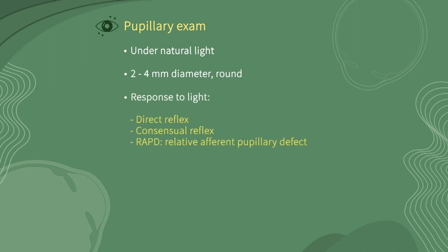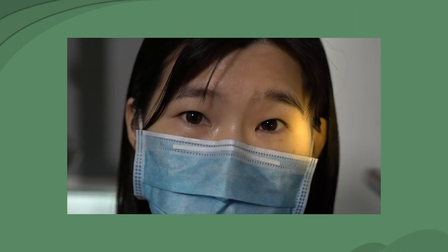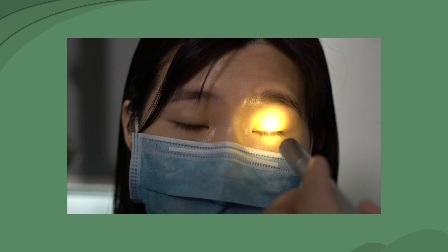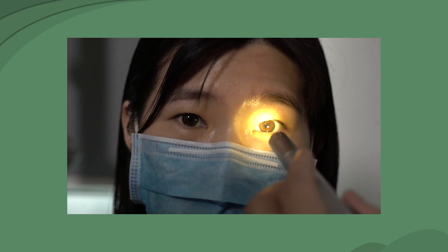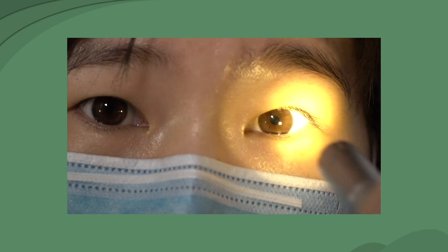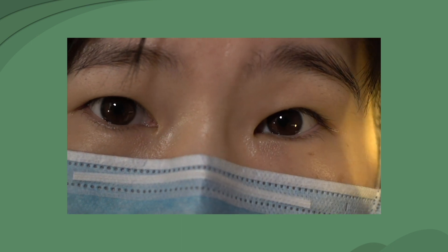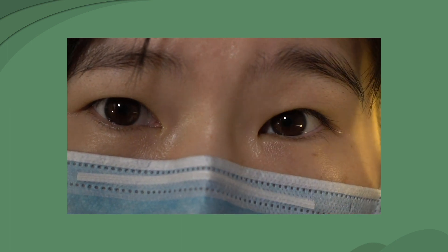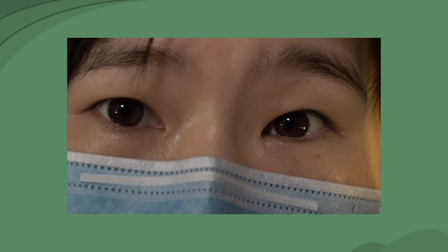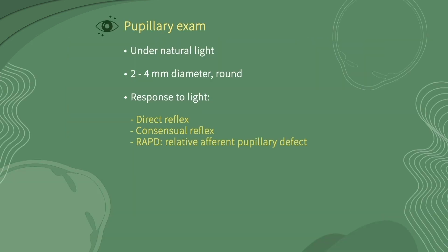There are several different pupillary responses. Direct reflex: ask the patient to look straightforward. The examiner shines a light to the patient's one eye and observes whether the pupil of that eye constricts. Then take the light away and see whether the pupil dilates.